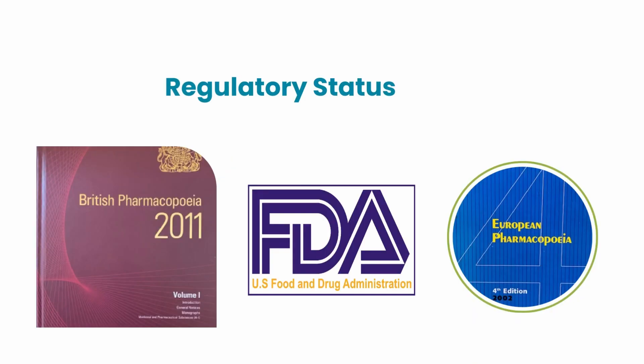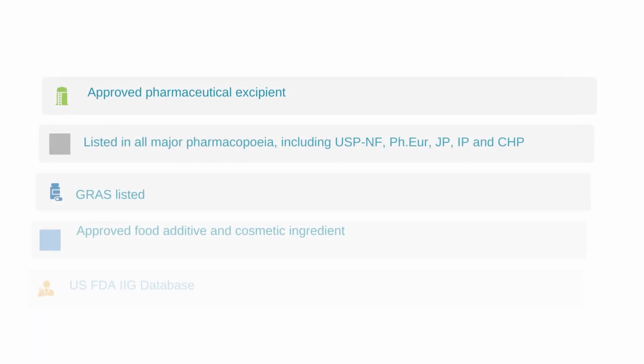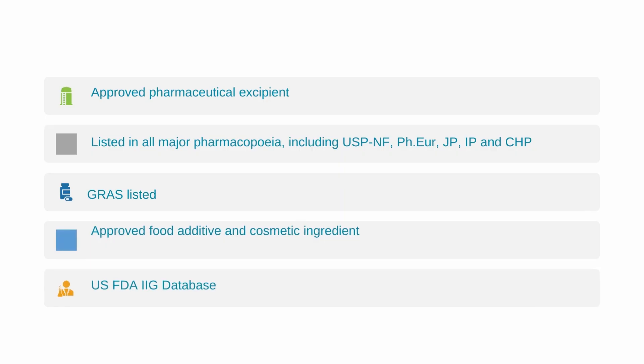Could you briefly summarize for us the current regulatory status of MCC? In which countries is it approved and what are its current authorized routes of administration? MCC is approved for use in pharmaceutical products as an excipient. All the major world pharmacopeias, including the United States Pharmacopeia, the European Pharmacopeia, and the Japanese Pharmacopeia have it listed. MCC is also GRAS-listed and accepted for use as a food additive in Europe and the United States.